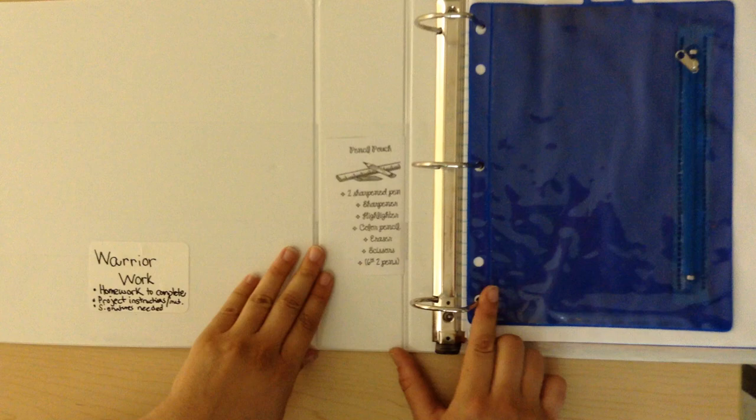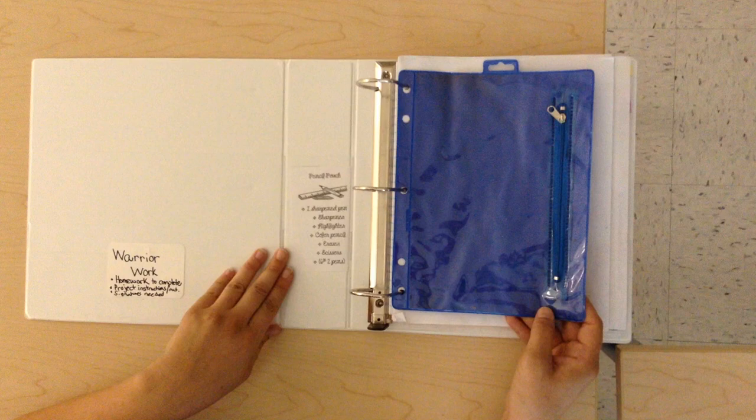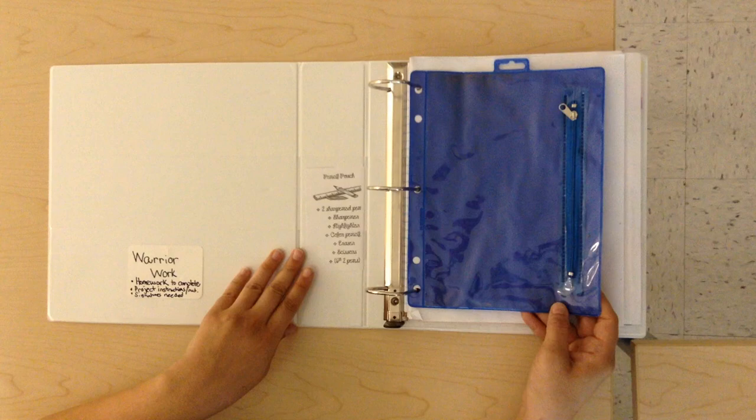Next, you will have your pencil pouch. In your pencil pouch, you should have two sharpened pencils, a pencil sharpener, one highlighter, 12 colored pencils, a pink eraser, one pair of scissors, and if you are a 6th grade student, you will also have two pens.